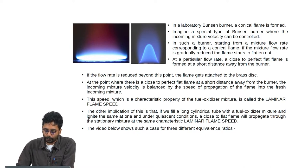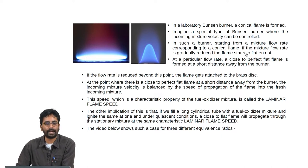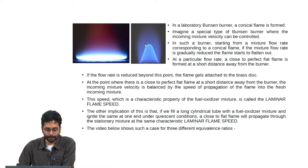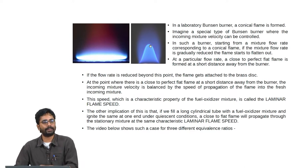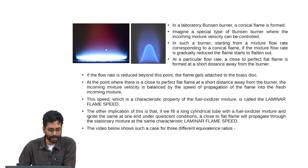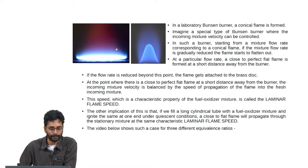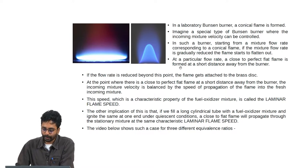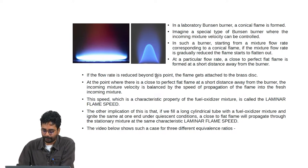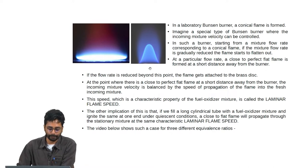If the mixture flow rate is gradually reduced, the flame will start to flatten out. You start from this condition, keep reducing the mixture velocity, and the flame will slowly become a flat flame. At a particular flow rate, a close-to-perfect flat flame is formed at a short distance away from the burner.